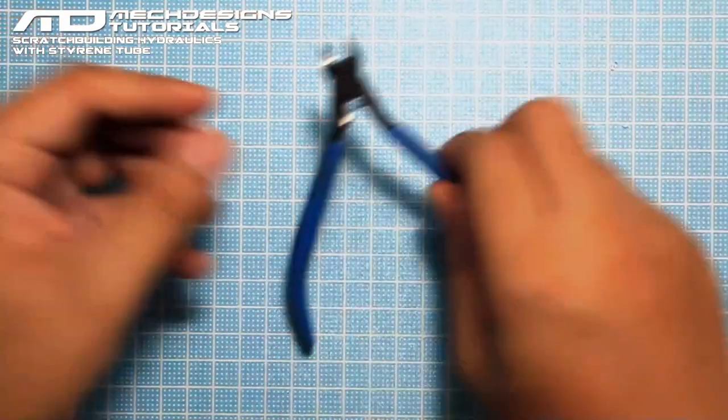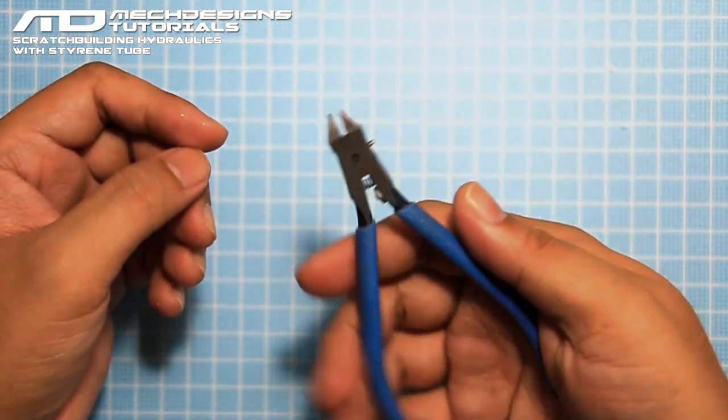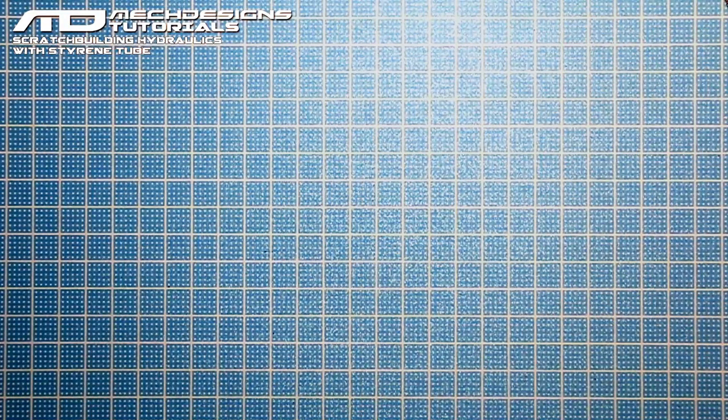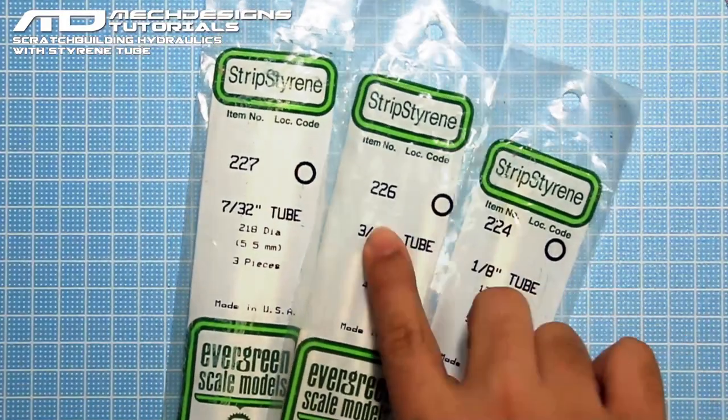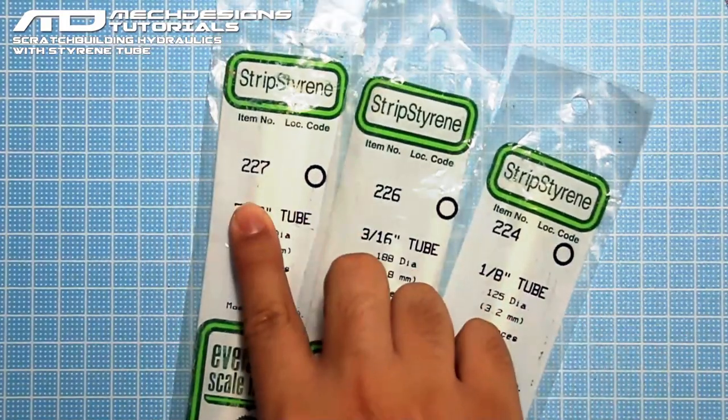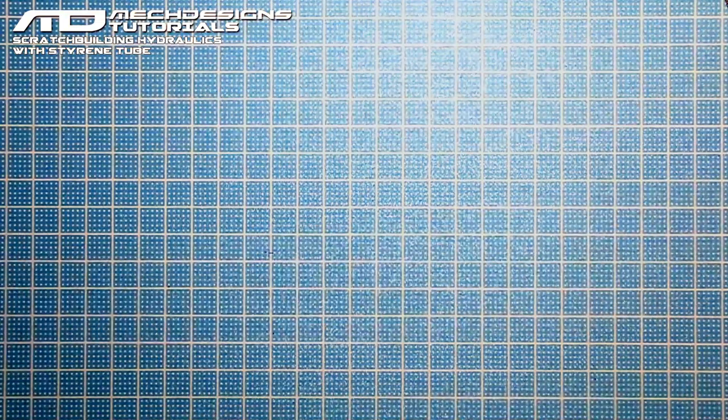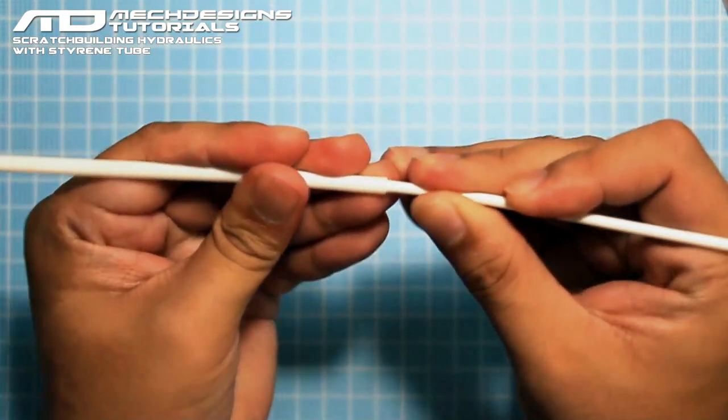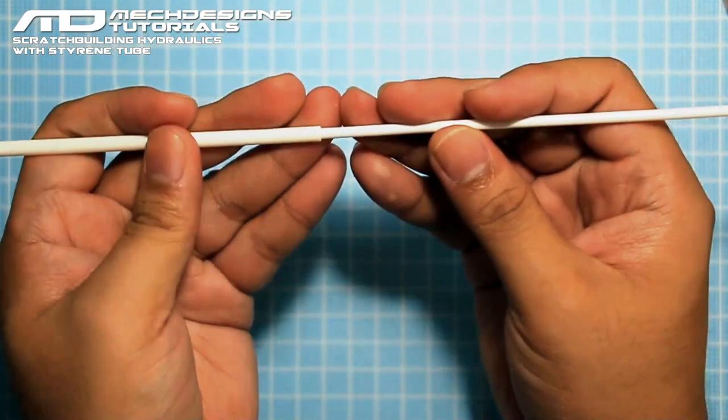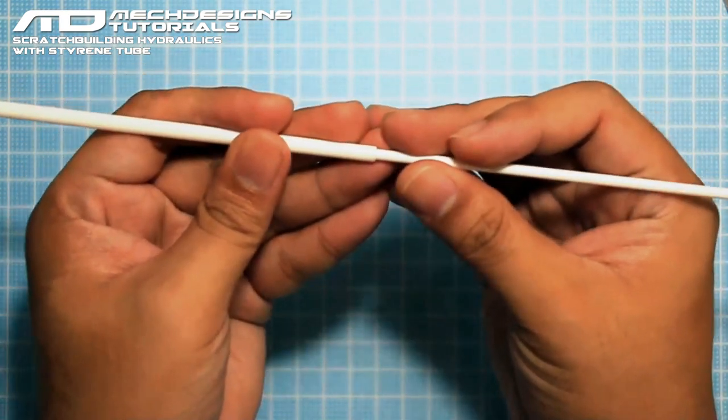Then a ruler, a pen that we're going to use as a marker, and nipper. This one is God Hand 120. As for the materials, I'll be using this scale model styrene tube, Evergreen item number 224, 226, and 227. And one of the reasons that I'll be using them is because it makes things easier. Most of the materials from Evergreen fit each other, so it will not be difficult for me to find materials that would actually help me build hydraulics.